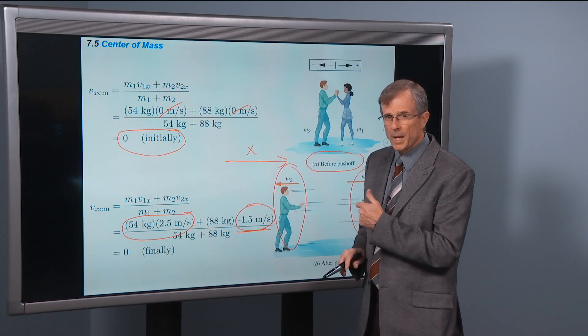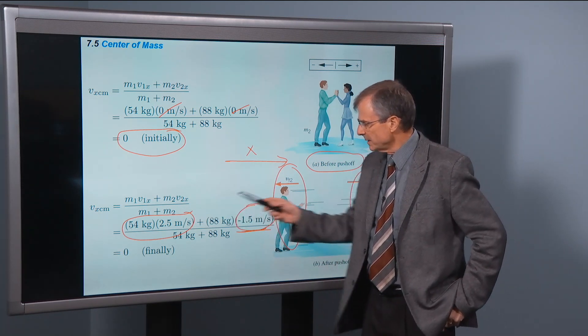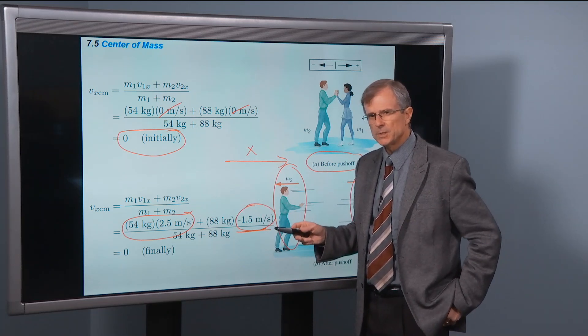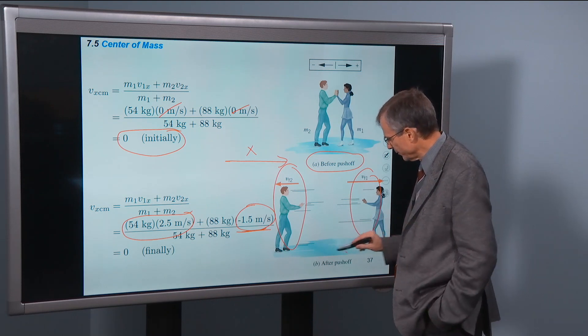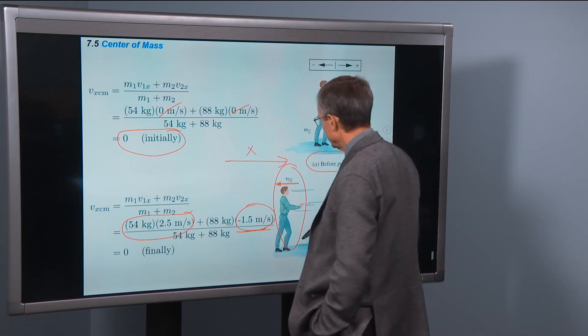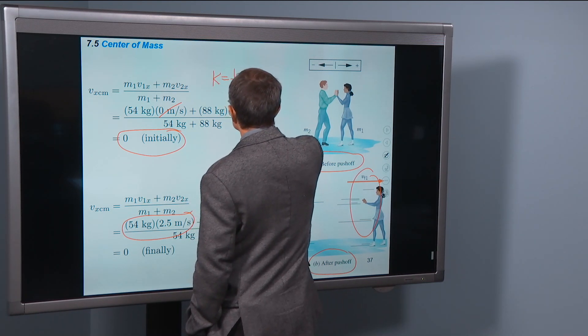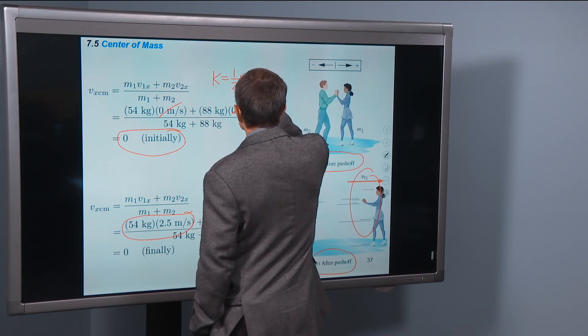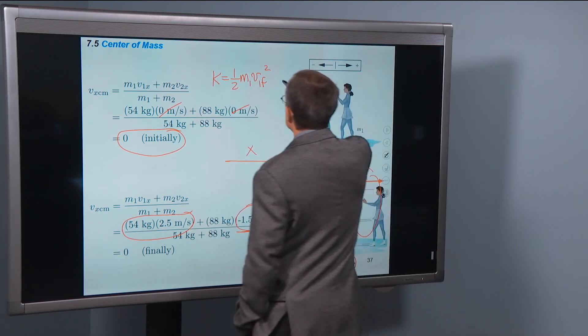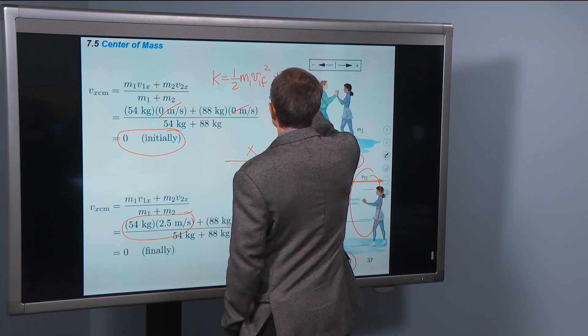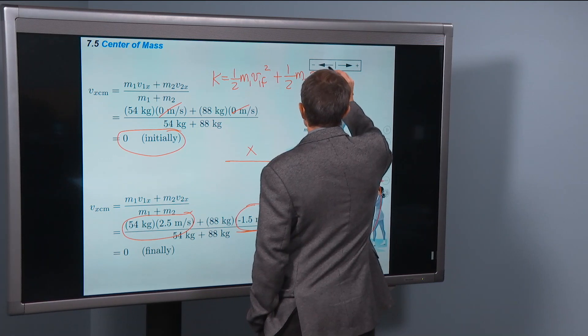Now just a little word to the wise: although momentums cancel each other, energies never do. If you wanted to add up the total energy after the push-off for the man and the woman, that total kinetic energy would be one-half m1 v1 final squared, that's for the woman, plus one-half m2 v2 final squared.